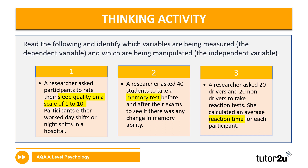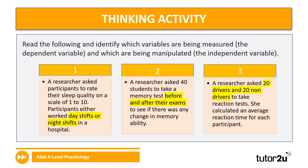In the first example, we're measuring sleep quality on a scale of one to ten. In the second, we're measuring the score on the memory test. And in the third, the measurement is reaction time. For the independent variable — remember, if you're struggling to distinguish IV from DV, the IV gives you the conditions of the experiment. The conditions in the first are day shift versus night shift; in the second, before or after exams; and finally, drivers versus non-drivers.